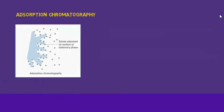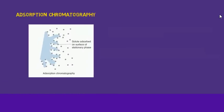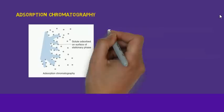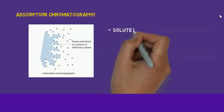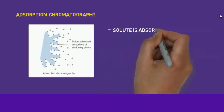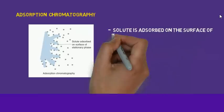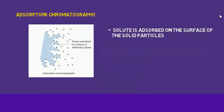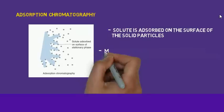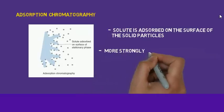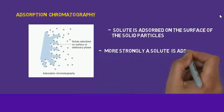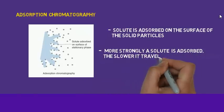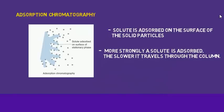In adsorption chromatography, molecules are adsorbed onto the surface of the stationary phase. If a molecule is more adsorbed to the stationary phase, then it travels more slowly throughout the column.